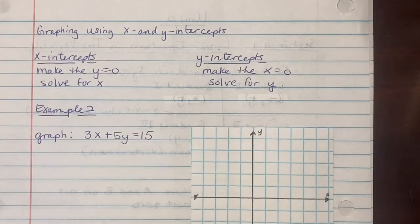Okay, when graphing using x and y intercepts, the first thing to know is that for x intercepts, you're going to make the y equal to 0 and solve for the x. Then make the y intercept, make the x equal to 0 and solve for y.